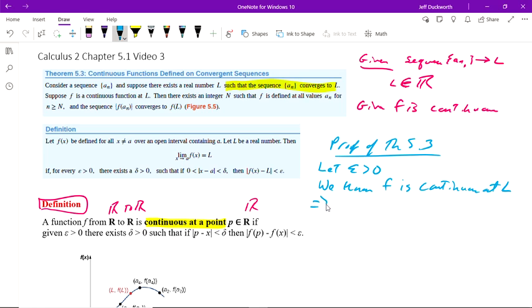That means there exists some delta, and the delta has to be positive. So delta greater than zero. Now, we would take F of X minus F of L and take the absolute value of that. That has to be less than epsilon. That's what we know. That's coming from this right here. We're given that.